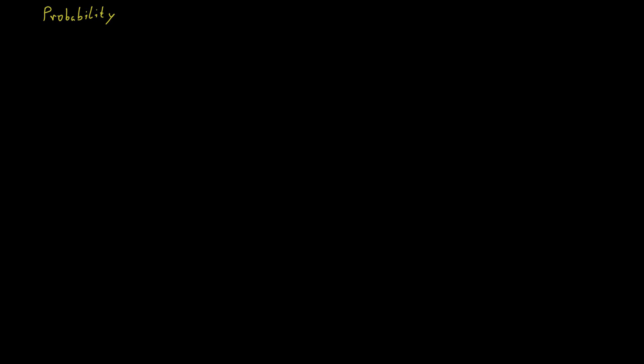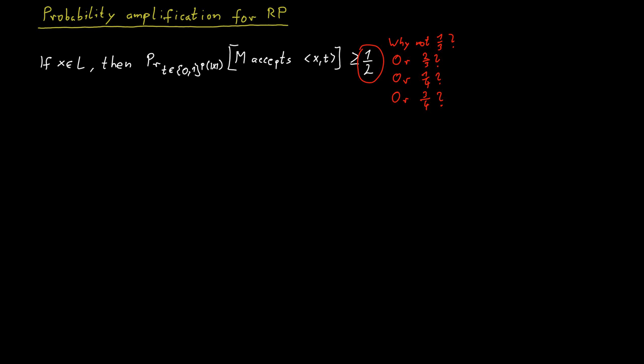When I stated the definition of the complexity class RP, I said that if a word is in the language, our Turing machine has to accept with a probability of at least one-half. But why did we pick one-half as the threshold? Why not say it has to accept with a probability of at least one-third or two-thirds or one-quarter or three-quarters? The number one-half here seems somewhat arbitrary.